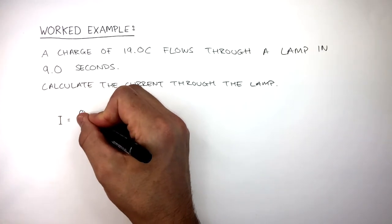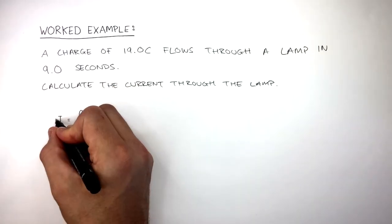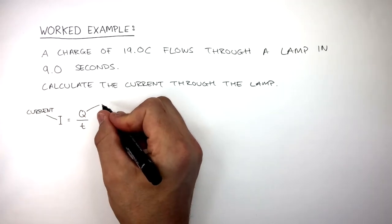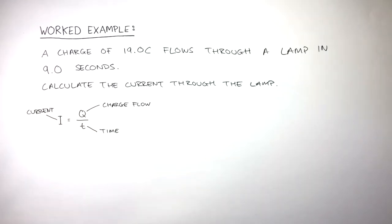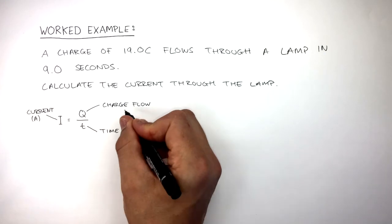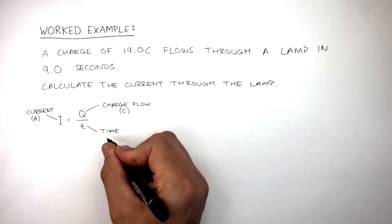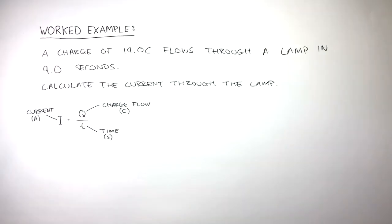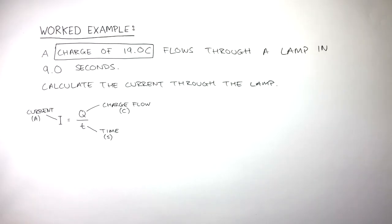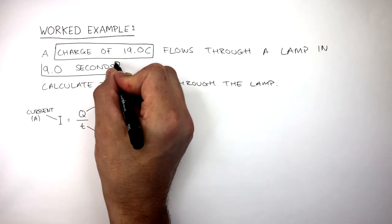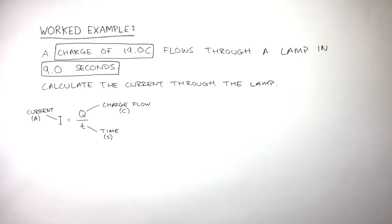As the question says, we need to calculate the current. We write down the equation I equals Q over T. I is the symbol of current, Q is the symbol of charge flow, and T is the symbol of time. We already know the unit of current is Amps, the unit of charge flow is Coulomb, and the unit of time is seconds.